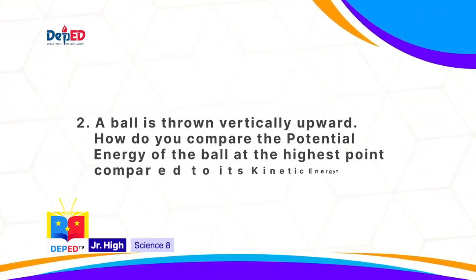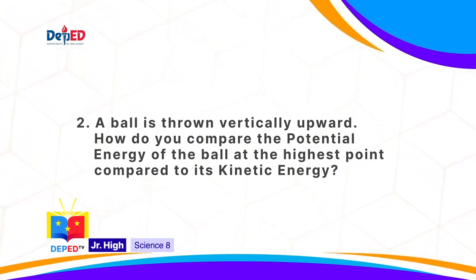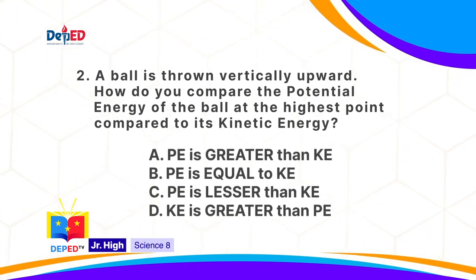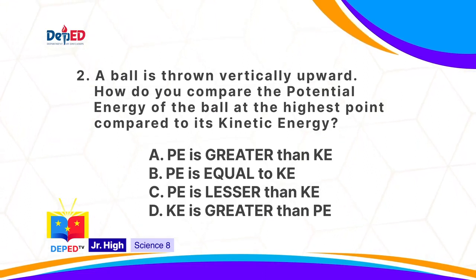A ball is thrown vertically upward. How do you compare the potential energy of the ball at the highest point compared to its kinetic energy? A. Potential energy is greater than kinetic energy. B. Potential energy is equal to kinetic energy. C. Potential energy is lesser than kinetic energy. Or D. Kinetic energy is greater than potential energy.